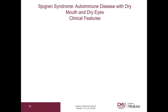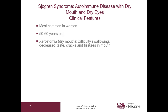Let's go on to Sjogren's syndrome, which refers to an autoimmune disease with dry mouth and dry eyes. This is most common in women, generally in the age 50 to 60 years old. These patients can have xerostomia, which means dry mouth. This can present with difficulty swallowing, decreased taste, and cracks and fissures in the mouth.